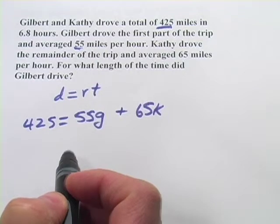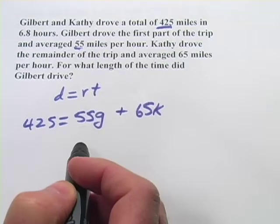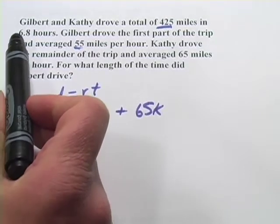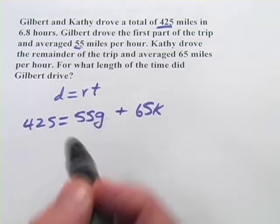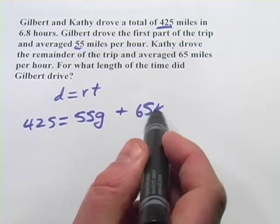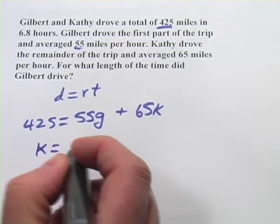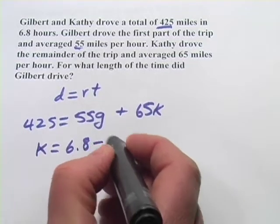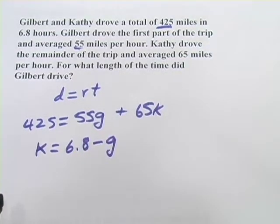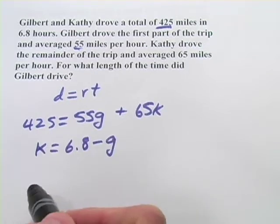We need to figure out a way to get another equation here. Well, we have one other fact. Their total time was 6.8 hours. And our variables are the time that Gilbert drove and the time that Kathy drove. So you could say that Kathy drove for 6.8 minus the time that Gilbert drove. Once we've got that, we've got two equations, two variables, we're ready to solve.